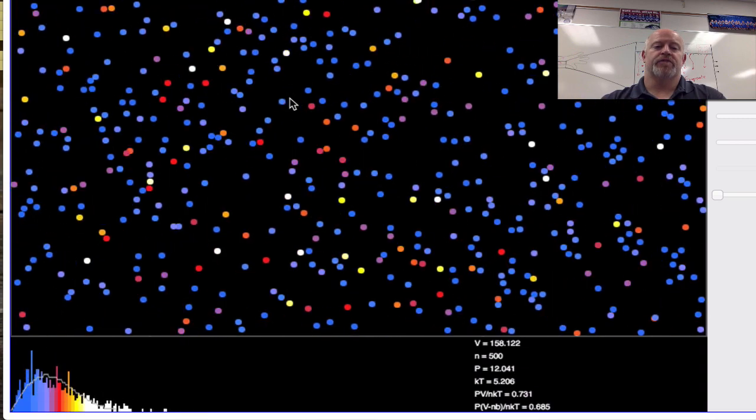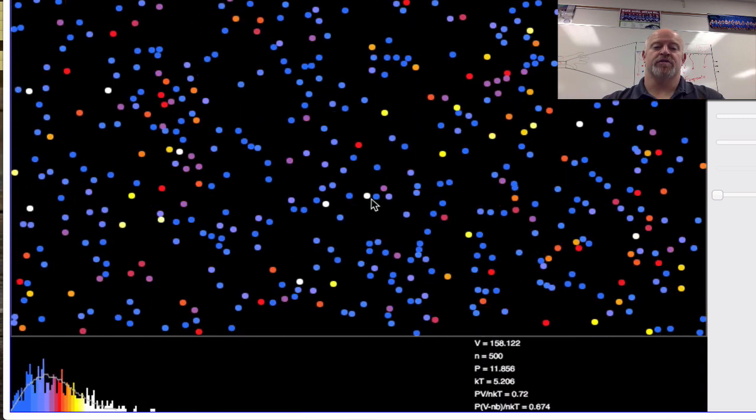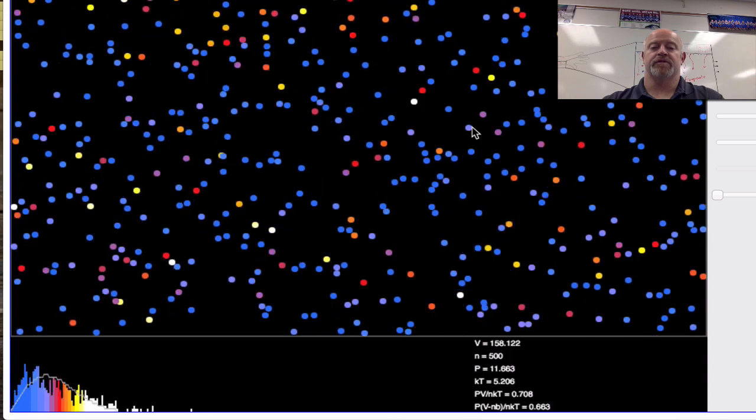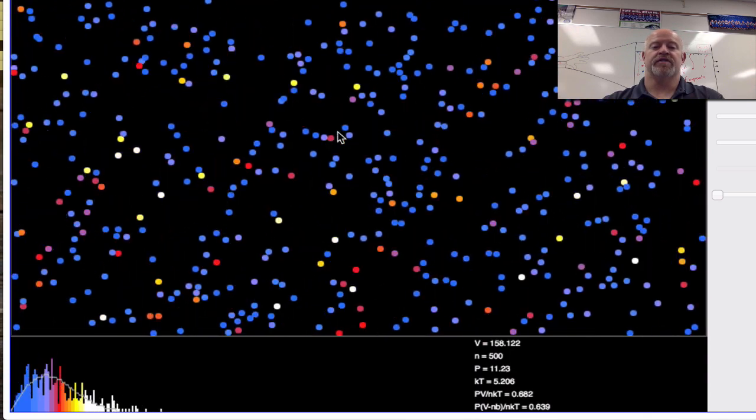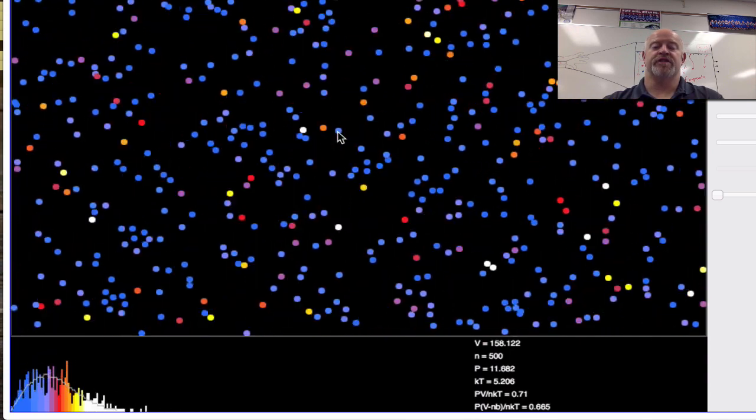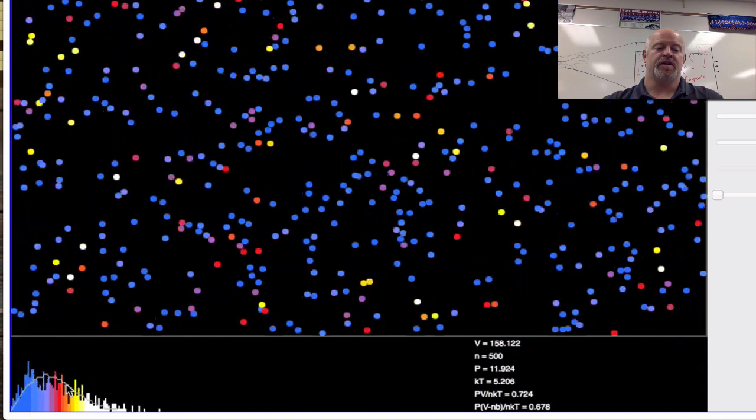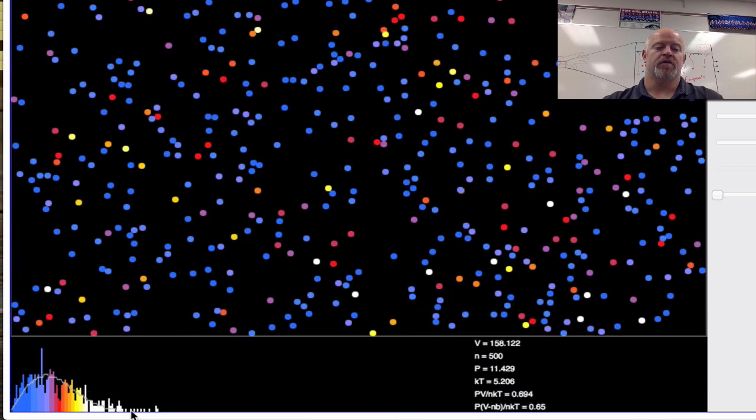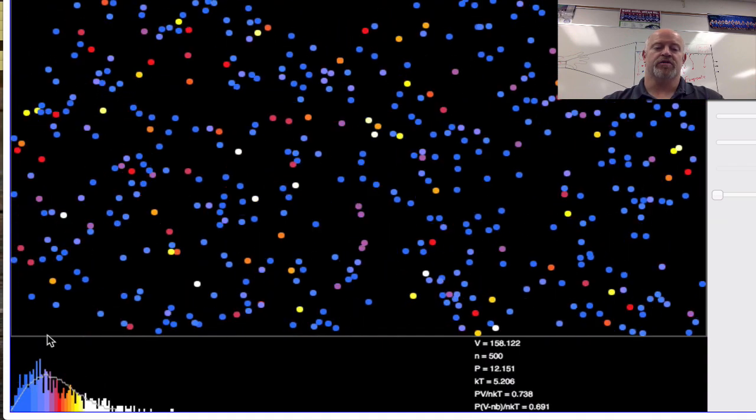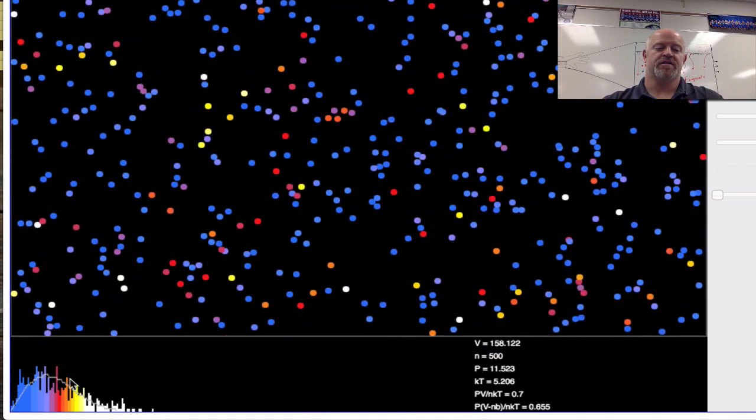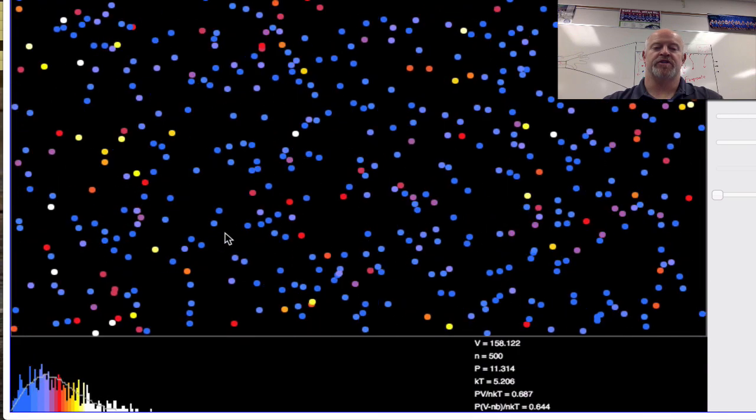So in this graphic, if we take a look, this kind of shows all the different particles moving around in a gaseous state. And they're moving at different speeds as you take a look at this. Then down here, if you look in the left hand corner, we see kind of a curve developing. But we have all these different particles - some are moving very very fast, some moving very very slow as you take a look at this.